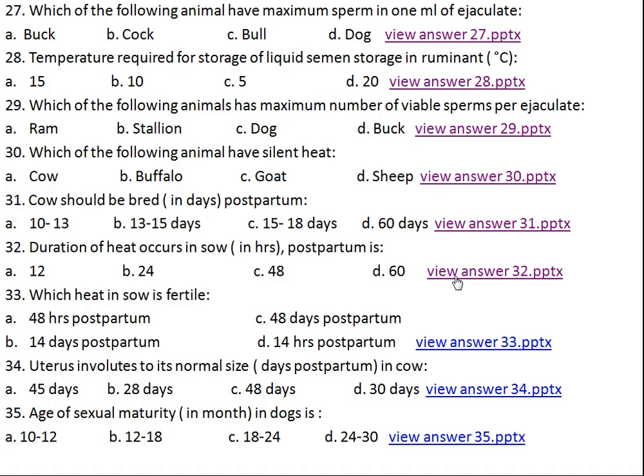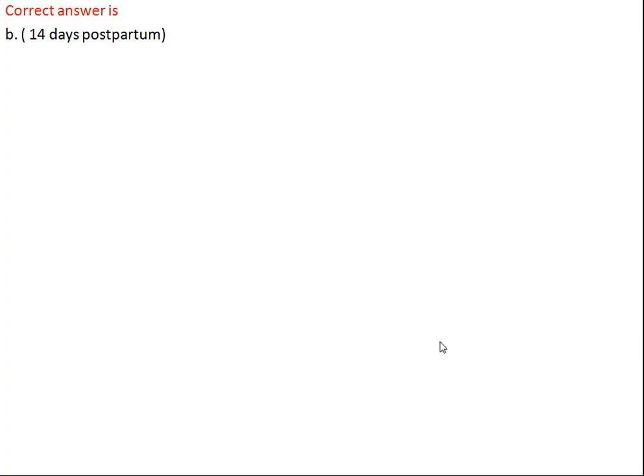Question number thirty-three: which heat in sow is fertile? Option A: 48-hour postpartum, Option B: 14 days postpartum, Option C: 48 days postpartum, Option D: 14 hours postpartum. The right answer is B, 14 days postpartum. Although immediate heat occurs 48 hours after parturition, at that time the animal is not able to sustain another pregnancy, so that immediate heat is not the fertile heat.